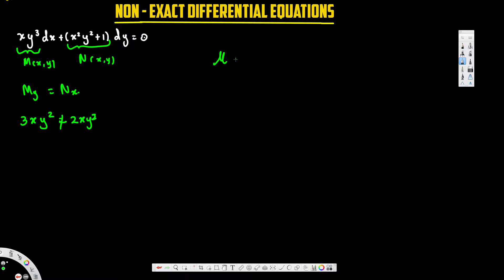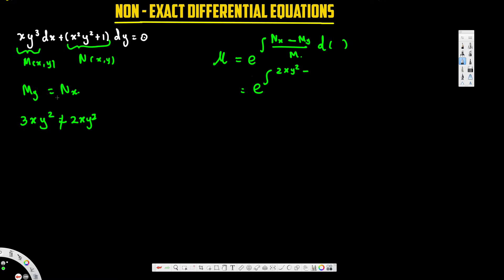To find the integrating factor, we use the equation: μ = e^(∫(Nx − My)/M). We already found Nx = 2xy² and My = 3xy², so we plug them in: (2xy² − 3xy²) divided by M, where M = xy³.